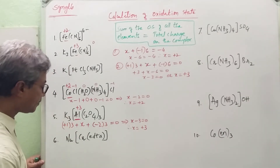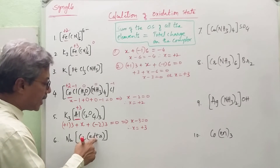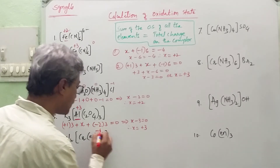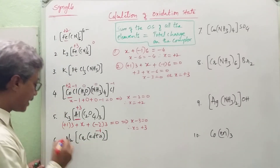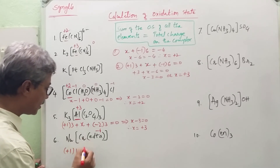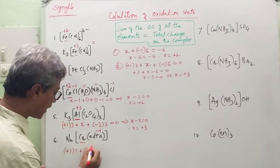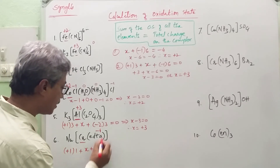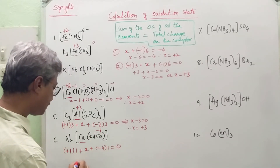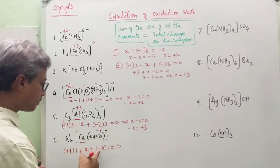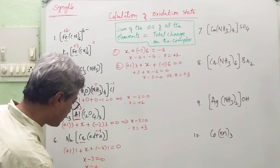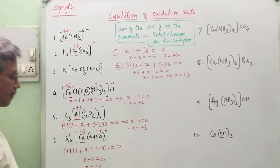Now look at this example. Ethylenediaminetetraacetate (EDTA) ion has a charge of minus 4. There is an alkali metal with charge +1 appearing once, giving +1. The central metal chromium has unknown oxidation state x. Plus EDTA with charge minus 4 once. Total charge is 0. So: +1 + x − 4 = 0, meaning x − 3 = 0, therefore x = +3. The oxidation state is +3.